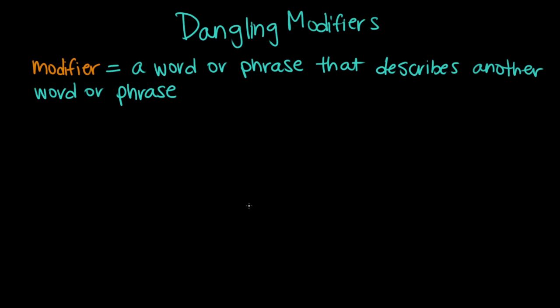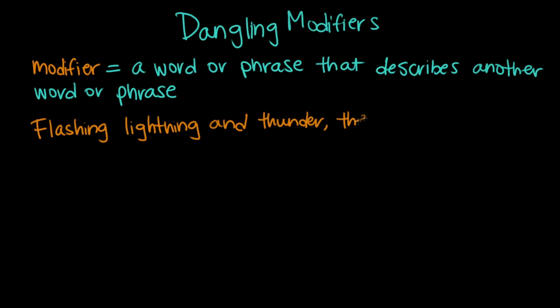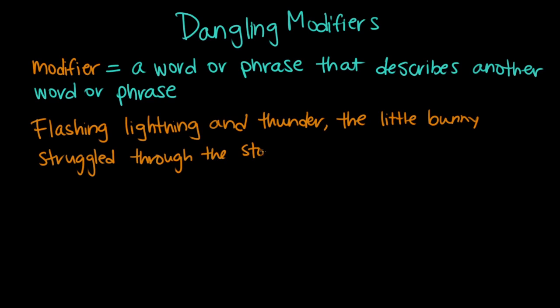So this can look something like: flashing, lightning, and thunder, the little bunny struggled through the storm. So this sentence has a dangling modifier, and the modifier in question is flashing, lightning, and thunder. So the phrase that this comes right before is the little bunny, and flashing, lightning, and thunder is not describing the little bunny, right?